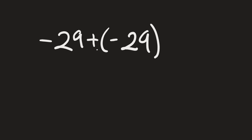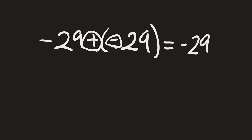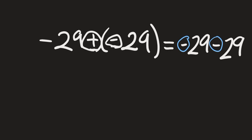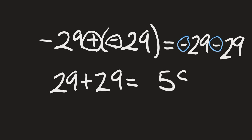Our last question for this video will be negative 29 plus negative 29. When we have a positive and a negative right next to each other, a positive times a negative is a negative, so we rewrite this as negative 29 minus 29. Since they both have a negative in front, they have the same sign, so we add them — 29 plus 29 is 58 — and since both numbers are negative, our answer is negative 58.